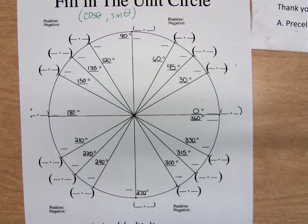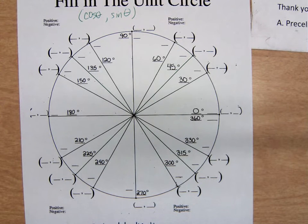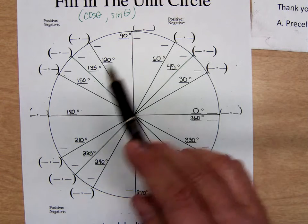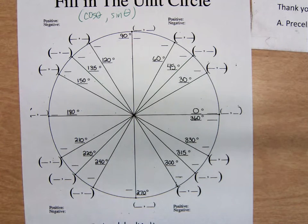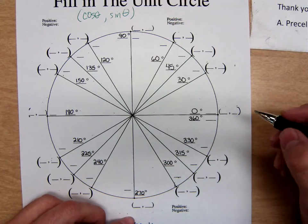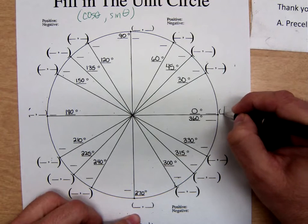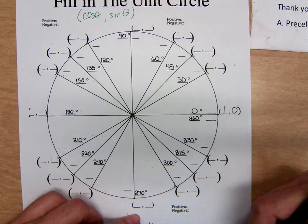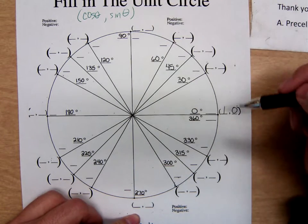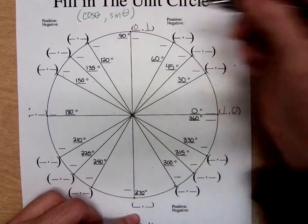I thought we'd real quickly review those points of intersection. This is a circle with radius one, so let's label the four points of intersection that are on the axis, the x-axis and y-axis. This point right here would be right one, up zero. At 90 degrees, what would that point of intersection be? Remember, this is a circle with radius one, so it would be zero, one.